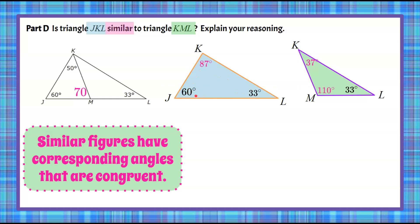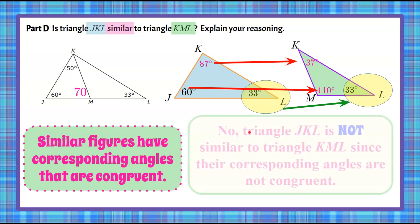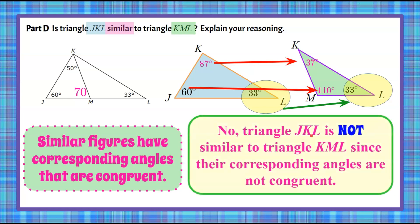So we've identified all three interior angles for each triangle, and each set sums to 180. Now we determine if they're similar — corresponding angles must be congruent. Looking at the angles: 87 is not equal to 37, and 60 is not equal to 110. The only angles that match are both angle L values of 33 degrees, and that is not enough to make them similar triangles. Therefore, triangle JKL is not similar to triangle KML since their corresponding angles are not congruent.